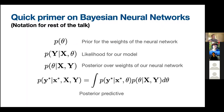Bayesian neural networks differ from standard networks in that we place a prior distribution over weights and use Bayes' rule to infer the posterior distribution — proportional to the product of the likelihood and prior. We reason about new points through an output distribution — a posterior predictive distribution. This distribution over outputs is the key thing that introduces differences when considering adversarial robustness. Throughout the rest of the talk, I'll use fancy D to denote the dataset when conditioning jointly on x and y.